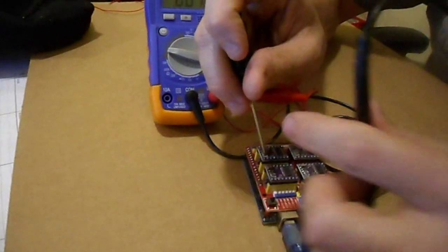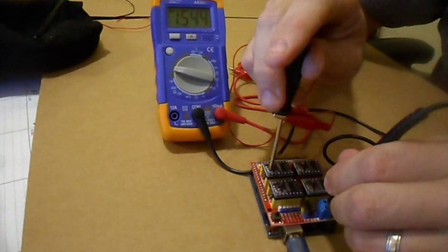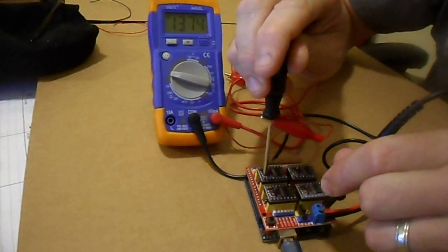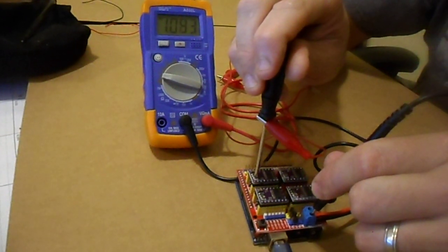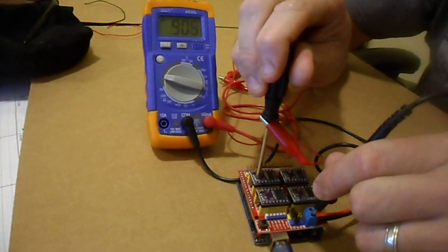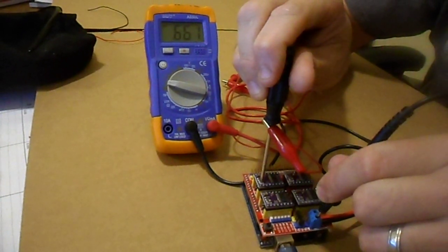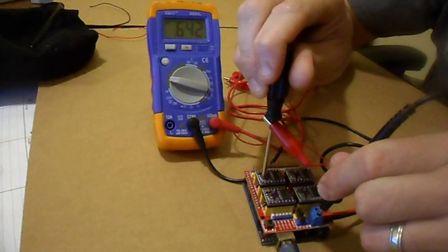So using both hands to get it there and I'm back on the ground terminal with my black lead and I'm just going to turn clockwise slowly looking for my 0.65 volts, a little under.